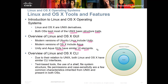With OS X, it's locked into what they call the Aqua GUI, but they do have some similar elements. Due to the relation to Unix, both Linux and OS X have similar command line interfaces or CLIs. The text-based tools have a shell. File permissions and case sensitivity are a few common characteristics. Linux and OS X are case sensitive, whereas Windows is not — they inherited that from Unix.